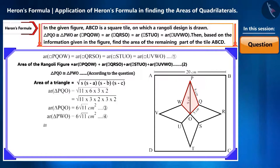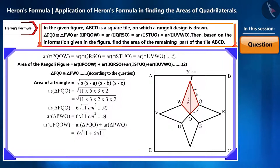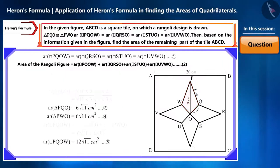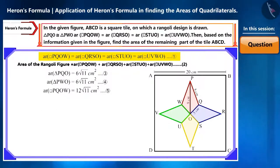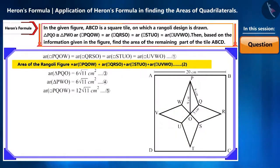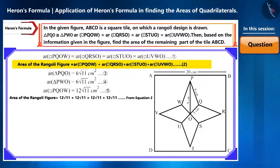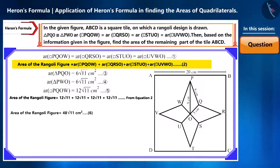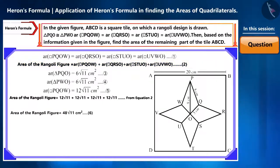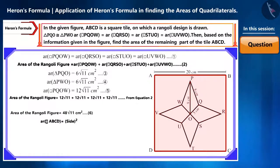Both triangles PQO and PWO are congruent, so the area of triangle PWO is also 6√11 square centimeters. We obtain the area of quadrilateral PQOW by adding these two, giving us 12√11 square centimeters. Since the areas of all four quadrilaterals are equal, the area of the Rangoli is 4 times this, which equals 48√11 square centimeters — let's call this equation 6.